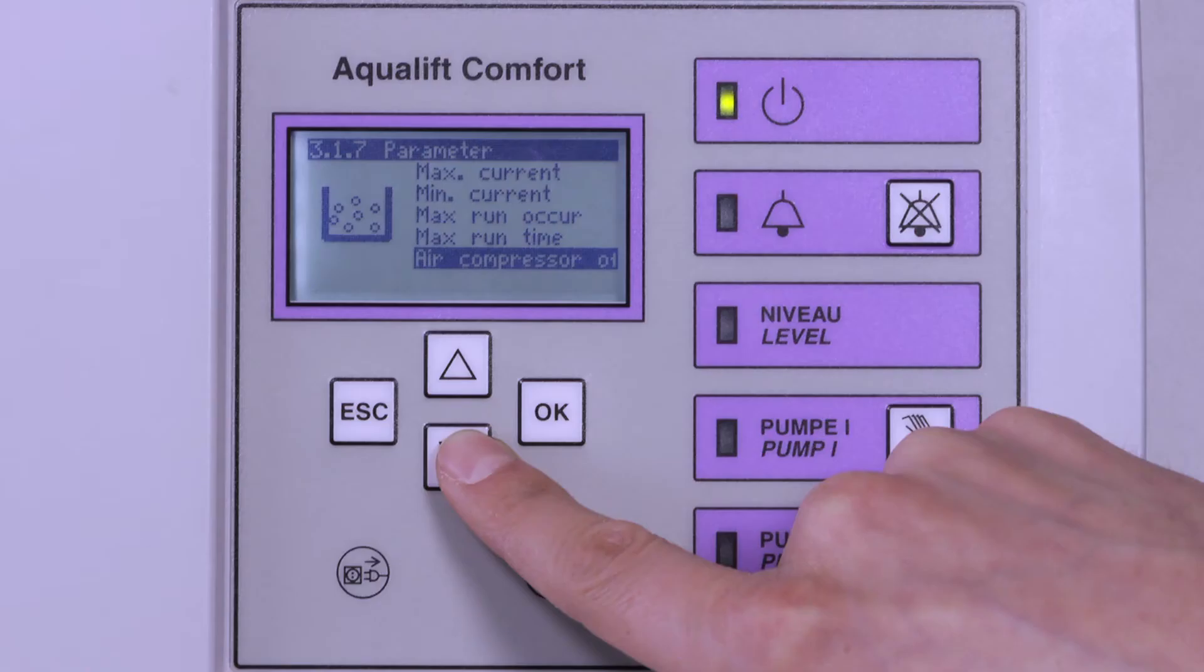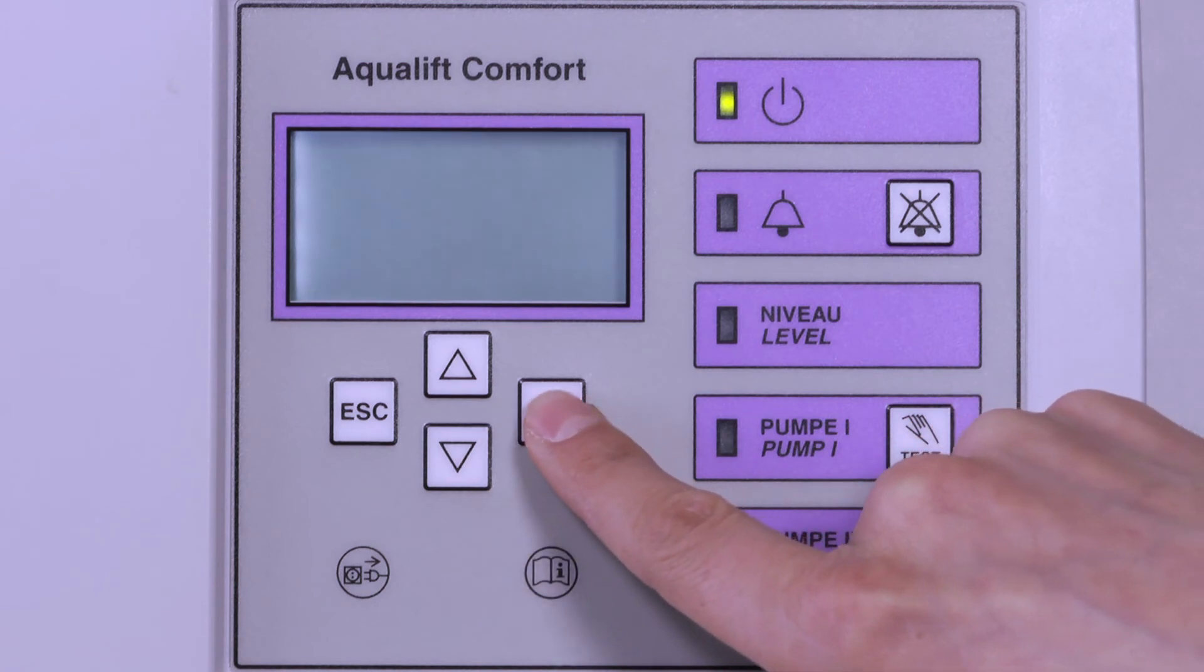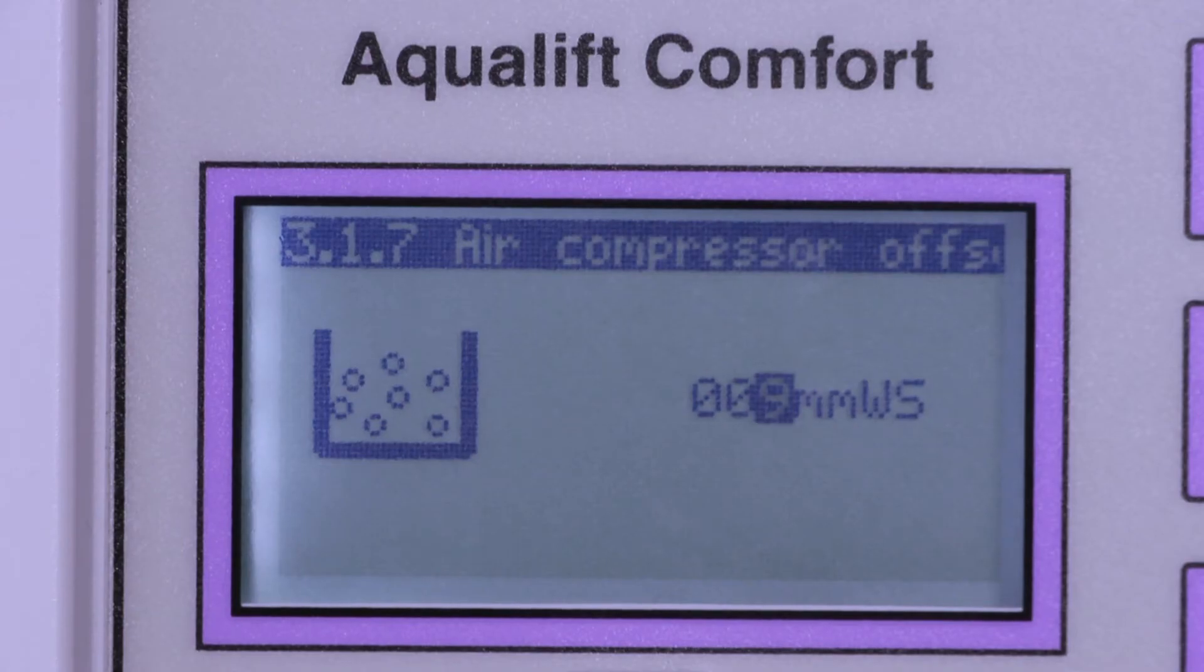To correct this, you must go to the settings menu and select air compressor offset under the parameters, then enter the difference between the old and the new water levels.